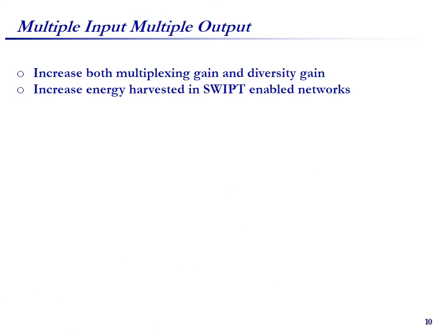In this slide, I introduce MIMO. MIMO is a major technology which can not only increase multiplexing gain but also diversity gain. Moreover, within a SWIPT-enabled cellular network, MIMO can also increase the amount of harvested energy.